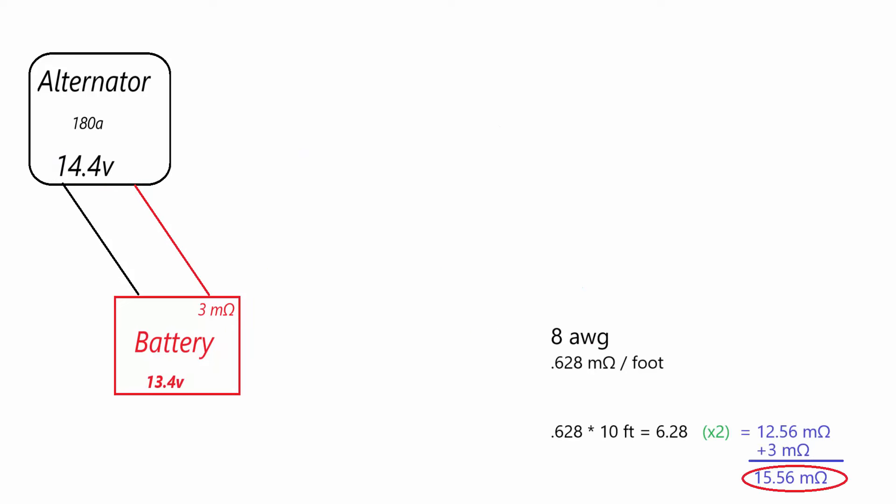For our final example, we're going to go back to the one volt difference that we had before. But this time we're going to assume that you ran 8 AWG wire, which has a resistance of 0.628 milliohms per foot. Multiplied by 10, we have 6.28 milliohms and we need to multiply that by 2 for each wire. This leaves us with 12.56 milliohms of resistance from the wiring added to the 3 milliohms of the battery that we're charging, giving us a total of a bit over 15 milliohms of total resistance. Now taking the 1 volt difference and dividing it by our resistance as seen here, you will see that the maximum potential amperage that can charge the battery from the alternator with this 1 volt difference is approximately 64 amps.